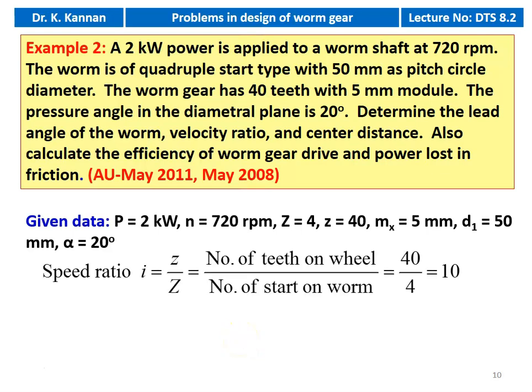Given data: power = 2 kilowatt, speed of worm = 720 RPM, number of starts Z = 4 (quadruple), number of teeth on wheel z = 40, axial module mx = 5 millimeter, diameter D1 = 50 millimeter, pressure angle α = 20 degree. First calculation — speed ratio: i = z / Z = number of teeth on wheel / number of starts of worm = 40 / 4 = 10.